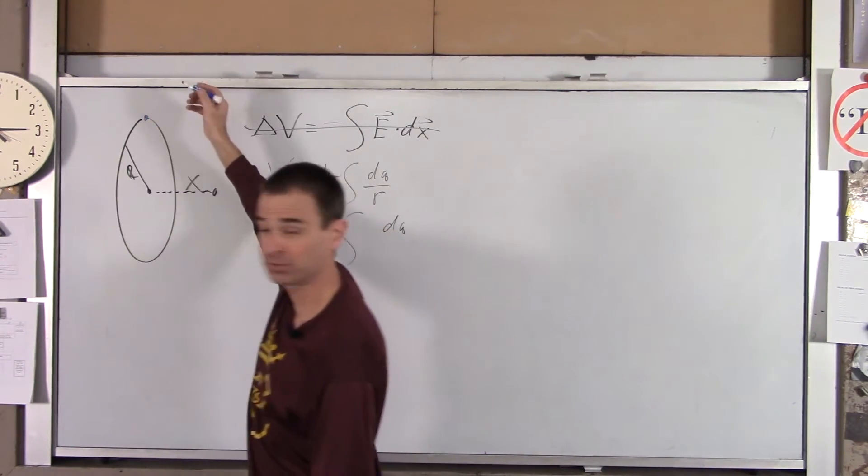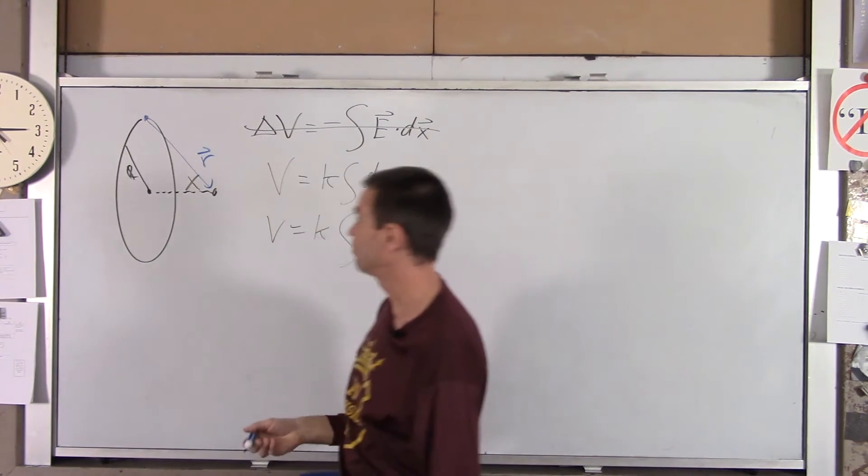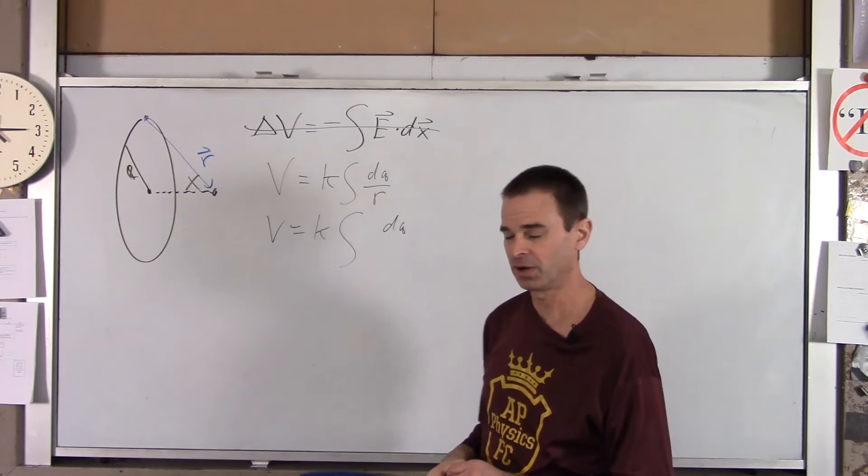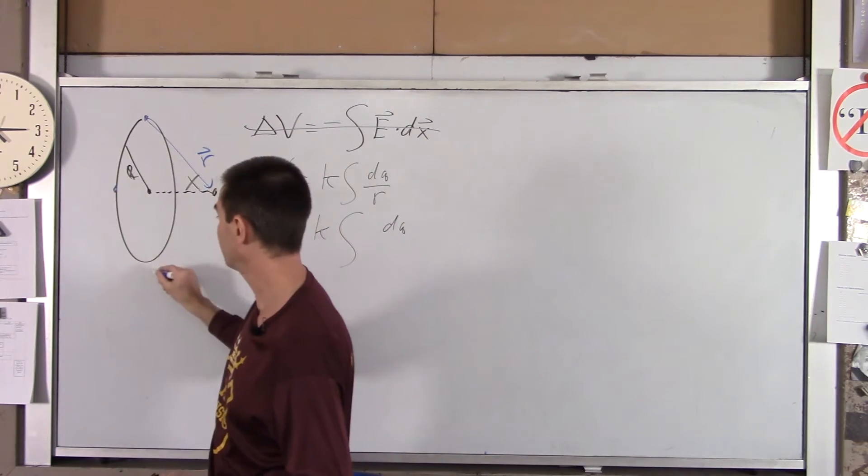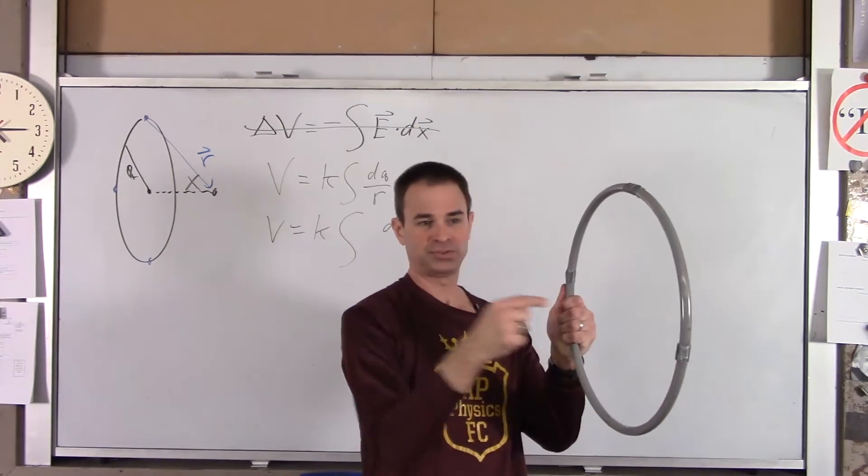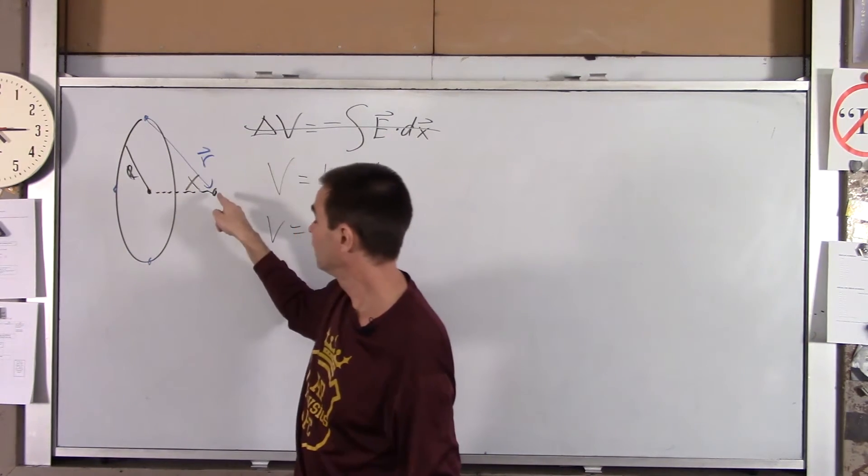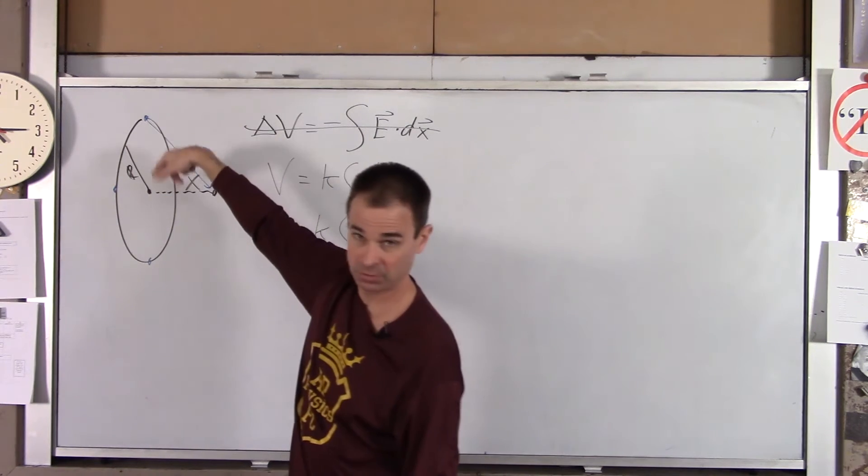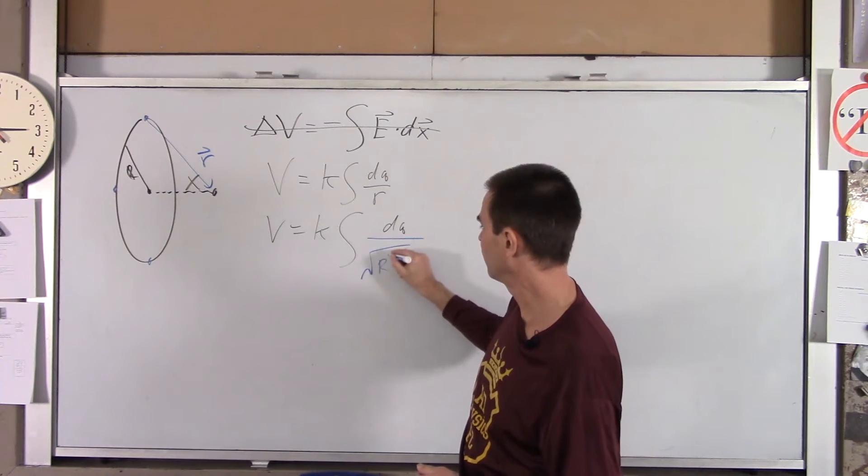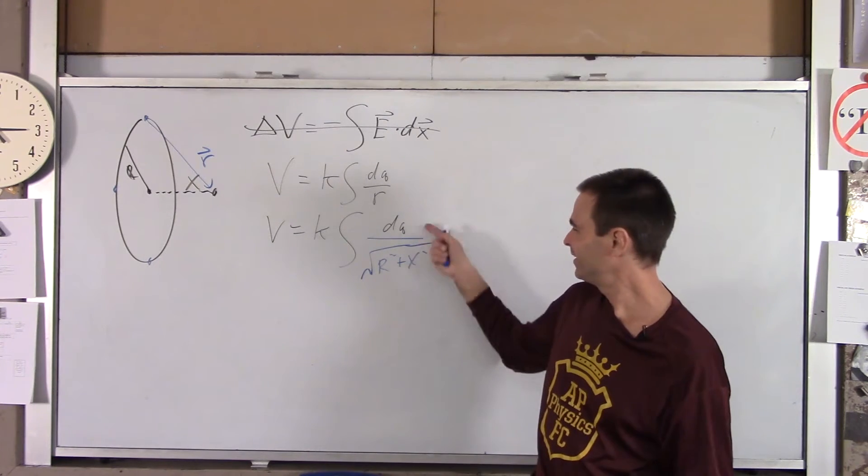Well, the charge, let's say, look at a little chunk of charge right there. It is this distance R from that point. You might notice that that distance is the same for every single chunk of charge. Whether I look at that chunk there or that chunk there or that chunk there, those distances are always the same. So that distance is simply, if you draw a right triangle here, R squared is X squared plus big R squared. So R is simply root big R squared plus X squared.